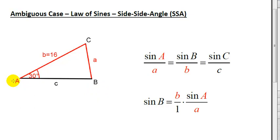So I have my typical triangle ABC. Side a is opposite angle A. Side b is opposite angle B. And side c is opposite angle C.